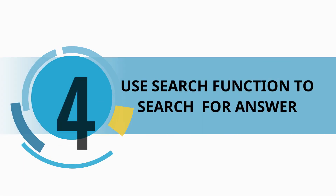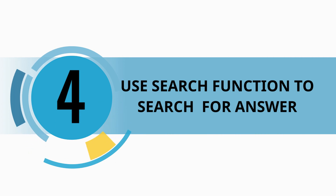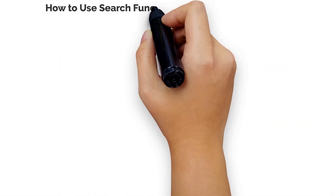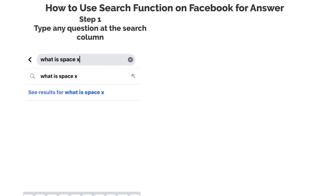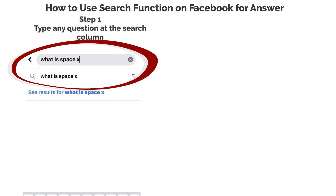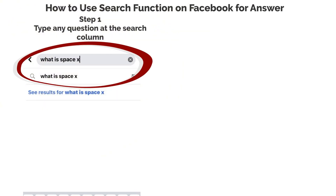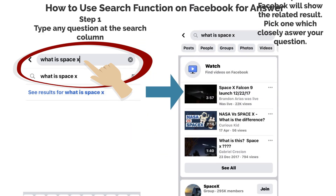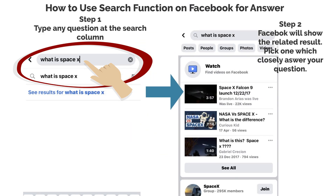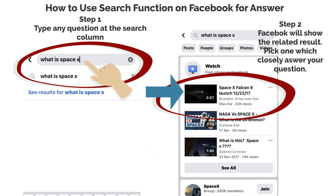Use the search function to search for an answer. Step 1: Type any question at the search column. Step 2: Facebook will show the related results. Pick the one which closely answers your question.